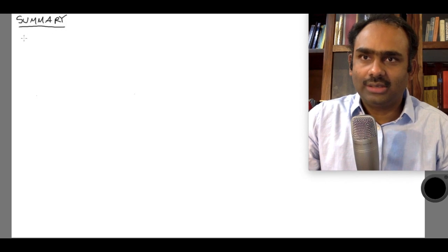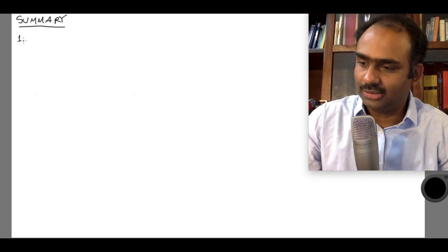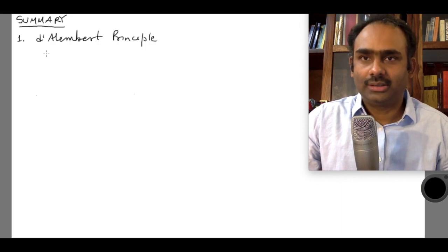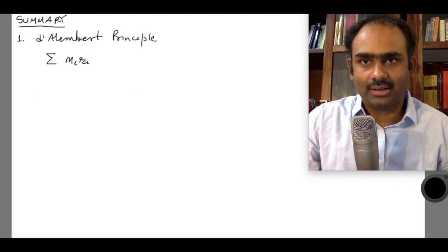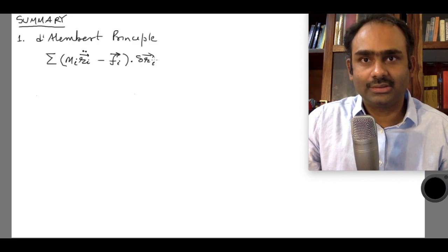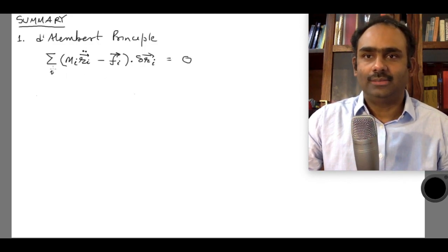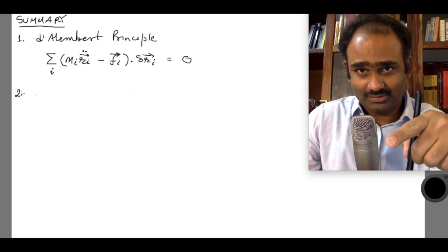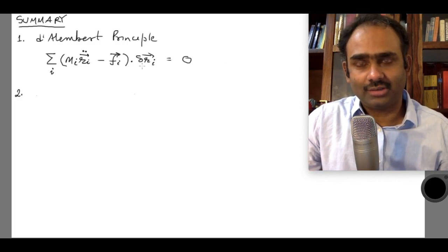We started these lectures by writing down first the D'Alembert principle: the sum of (m_i * r_i_double_dot minus the forces other than constraint forces) times the virtual displacements consistent with the constraints equals zero. That is what D'Alembert's principle is. Then we went on to introduce generalized coordinates, the reason being to transform this into independent generalized coordinates.